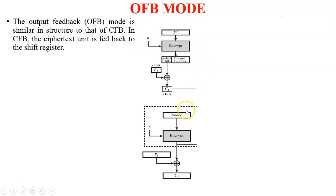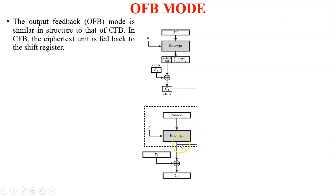In Output Feedback mode there is a nonce — nonce is one kind of initial vector. The use of nonce increases the complexity of the algorithm, and the same key K is used. In the encryption process, 64-bit IV and 64-bit key K are used, same as for OFB mode. It generates a 64-bit register output, and XOR of this 64-bit output with plaintext generates C1 — ciphertext 1, a 64-bit output.